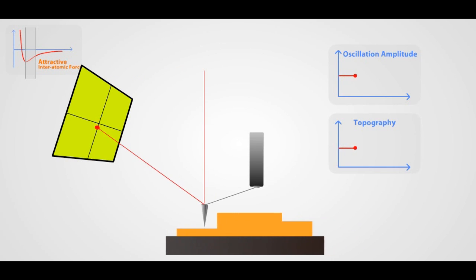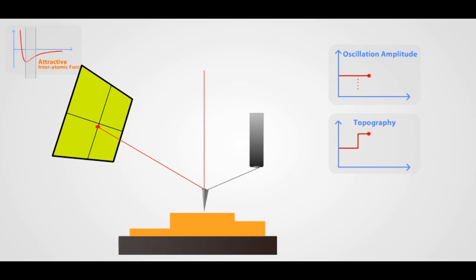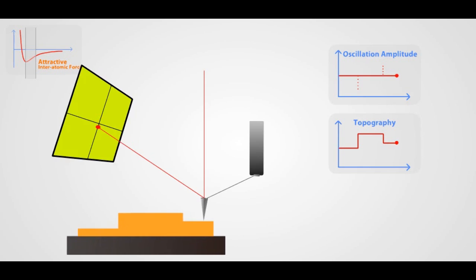A precise, high-speed feedback loop is used to keep the cantilever tip from crashing into the surface, thus retaining tip sharpness and leaving the surface untouched.